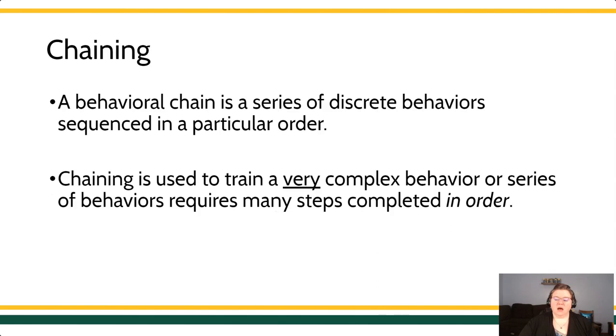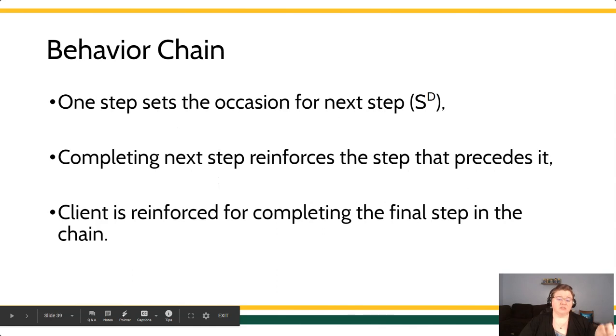Let's start with chaining. A behavior chain or behavioral chain is a series of discrete responses that are sequenced in a particular order. And the chain is important because we use this to train really complex behaviors or behaviors that require multiple steps. The steps have to go in order, and the reason that the order is important is because one step is going to be the discriminative stimulus to emit the next step.